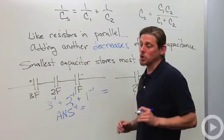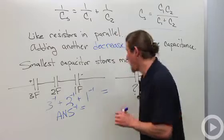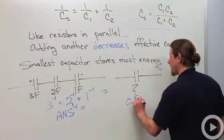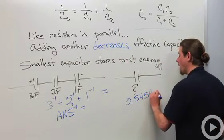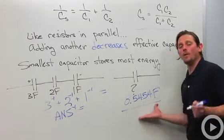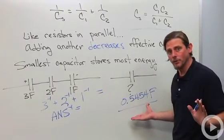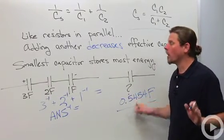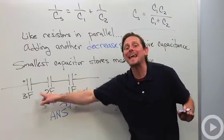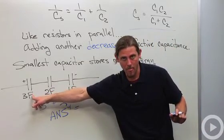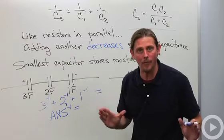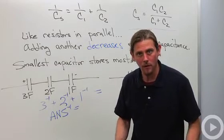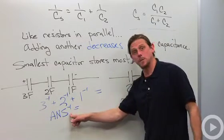Now, if you do that in this case, what you'll end up with is 0.5454 farads. And one thing to keep in mind about this is that this number is smaller than any of these three. It will always come out that way if you do it right.